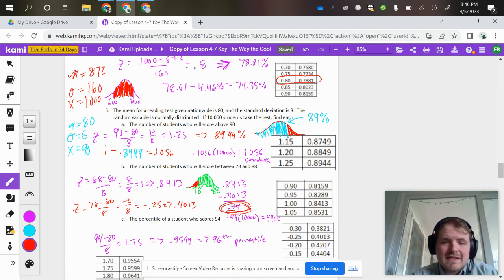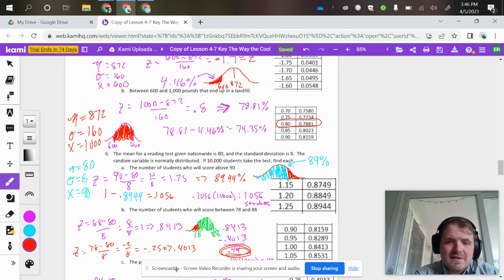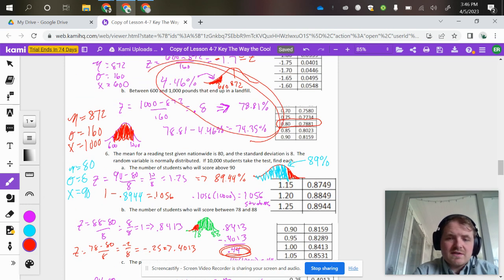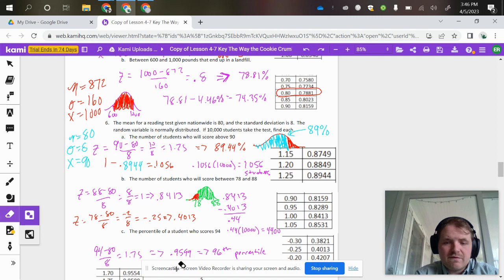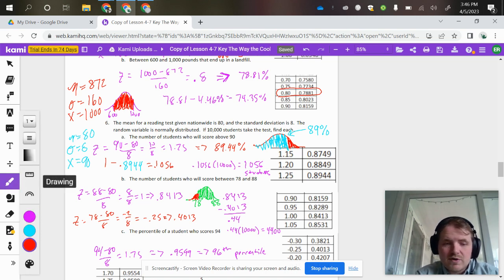But again, that's where the previous two questions stopped—they just wanted the percentages. But now we have how many out of 10,000, so we have to multiply that by 10,000 to get 4,400 students.